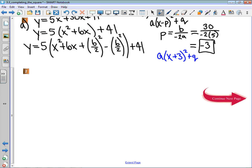Now within the bracket we'll do a little bit of work. 6 divided by 2 is 3, so I'm going to have y equals 5 times x squared plus 6x plus 9 minus 9 plus 41.